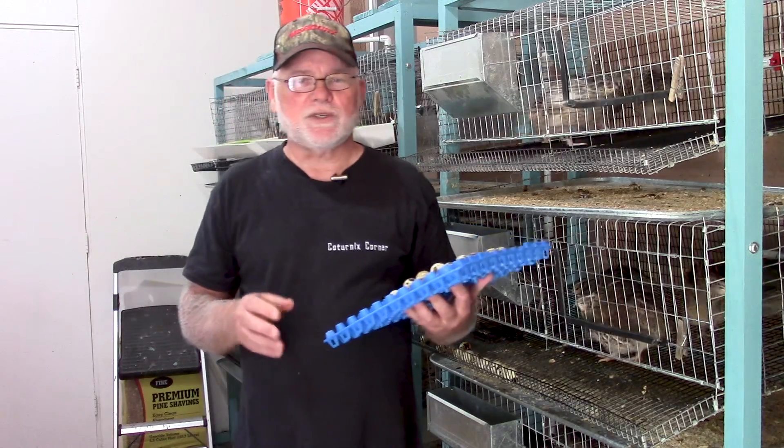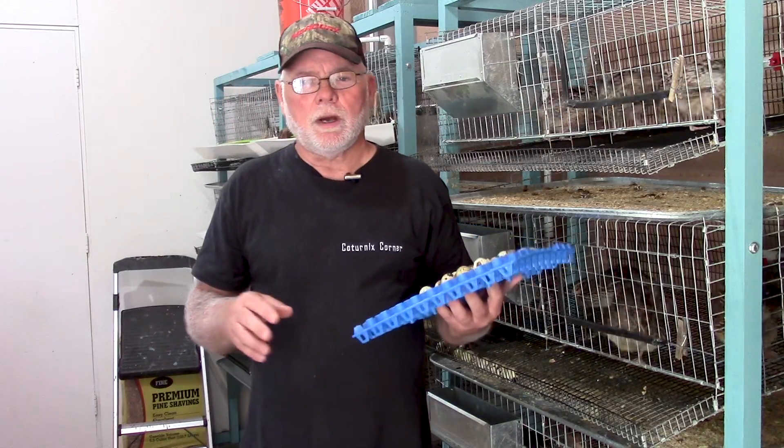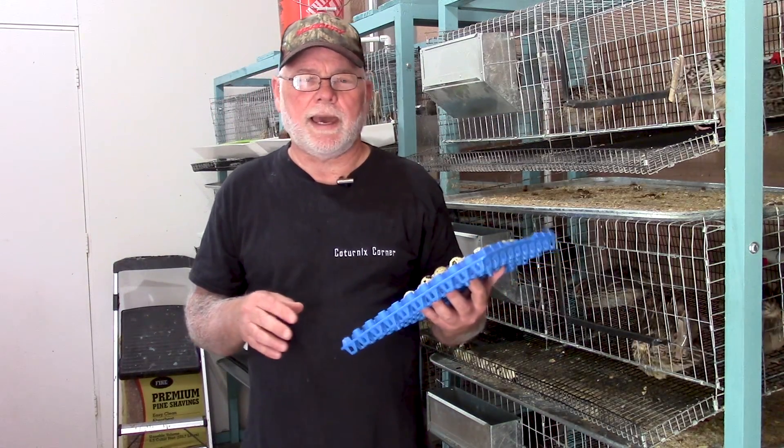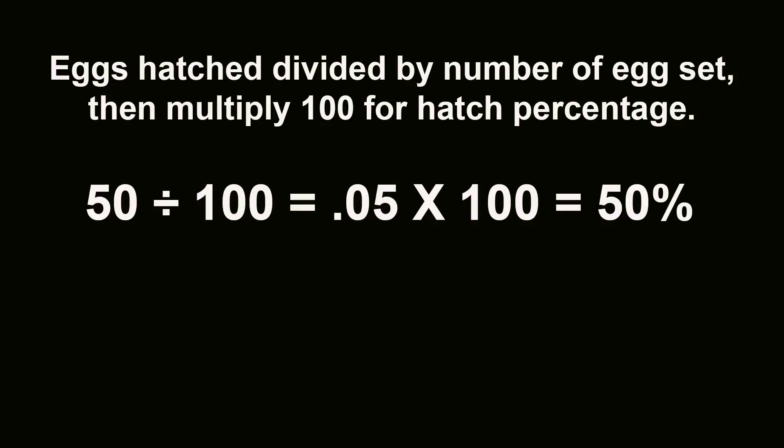Figuring hatch rates is real simple. Basically, you take the number of eggs that hatched and divide that by the total number of eggs set, and then you take the answer to that and multiply it by 100. That will give you your percentage of hatch, or a hatch rate percentage.